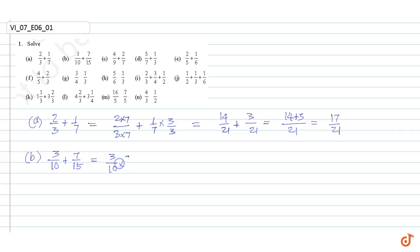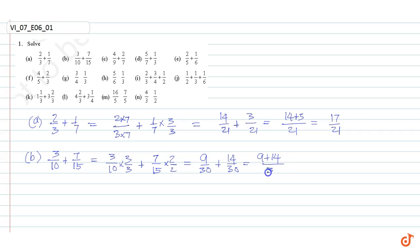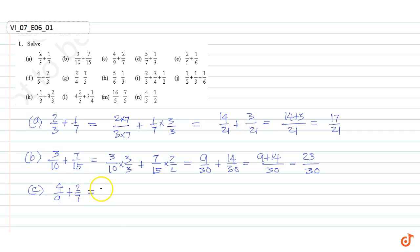Part b: 3/10 plus 7/15. Taking LCM as 30, we get 3/10 into 3/3 plus 7/15 into 2/2, equal to 9/30 plus 14/30, which is equal to 23/30.